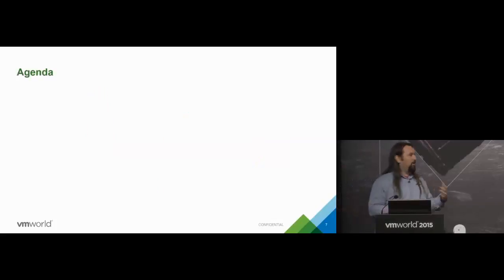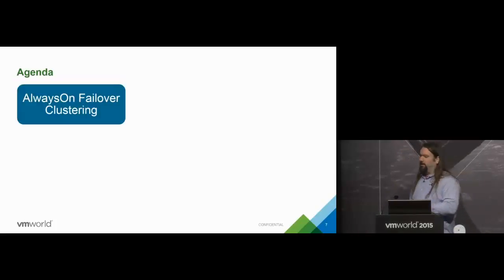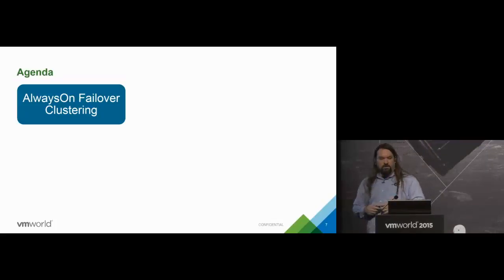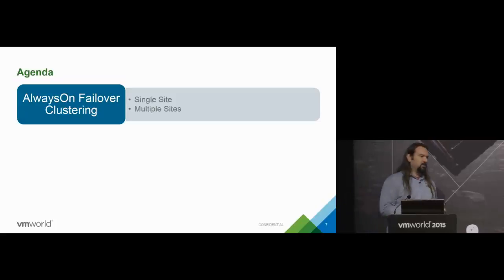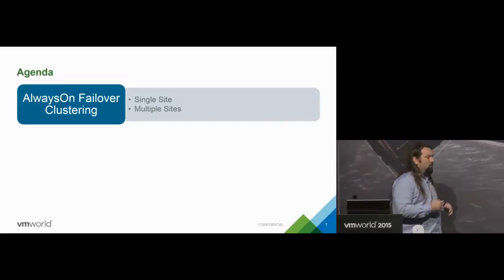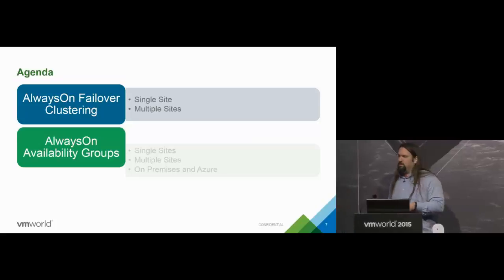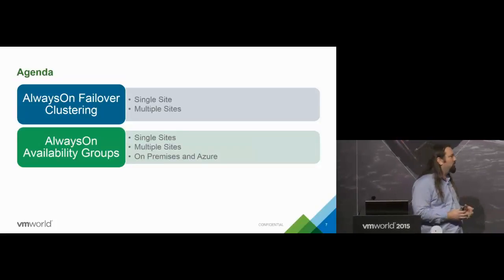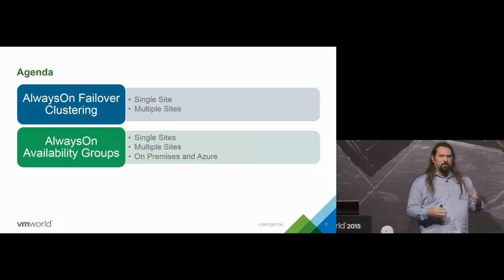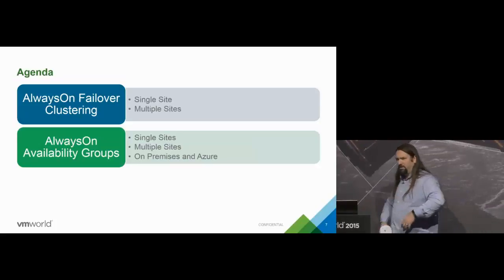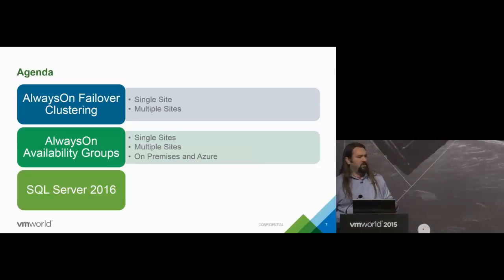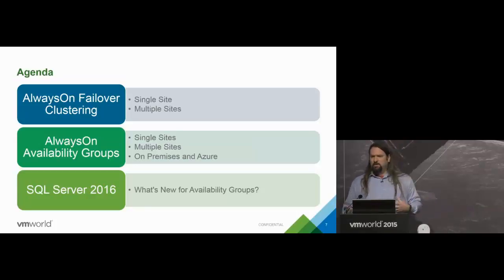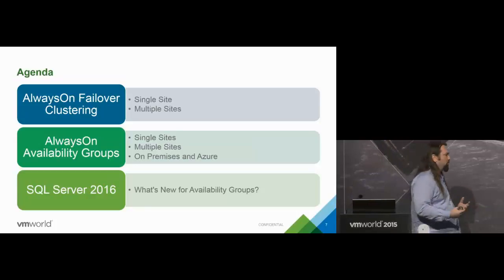Here is what we're going to talk about over the next 58 minutes. We're going to talk about always-on failover clustering — the traditional failover clustering we've had in SQL Server for a long time. We're also going to talk about always-on availability groups, a new feature introduced in SQL Server 2012 that's a little easier to use but has some limitations. And since we have a brand new version coming out, we'll discuss the options in SQL Server 2016.